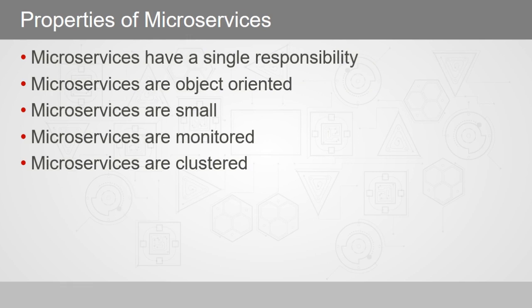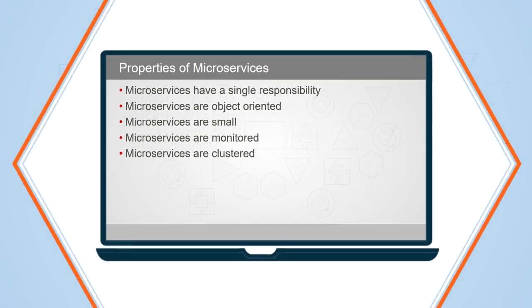Instead of a monolith having code to do everything, microservices have a single responsibility — they only do one thing. Microservices are object oriented, like most other things that you write. And instead of having a bunch of code, microservices are small, only designed and built to do one thing. Microservices are also monitored — monitoring and logging are part of the deal. A monolithic service architecture does not attempt to network each service, but this is not the case in a microservices architecture. Here, microservices are clustered, each small piece acts independently, and each piece is deployed on the cluster.